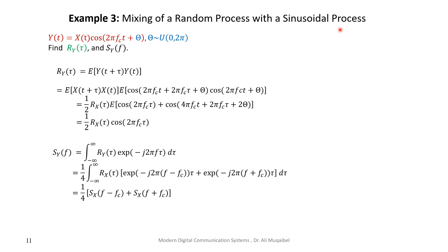Example 3: mixing a random process with a sinusoidal signal. The process x is a random process multiplied by a cosine. We want the output autocorrelation and output PSD. By definition, R_Y(τ) is the expected value of the output multiplied by a shifted version. This gives two x terms and a product of cosines, which we expand using trigonometric identities — the sum term goes to zero in the expectation, leaving a clean result.